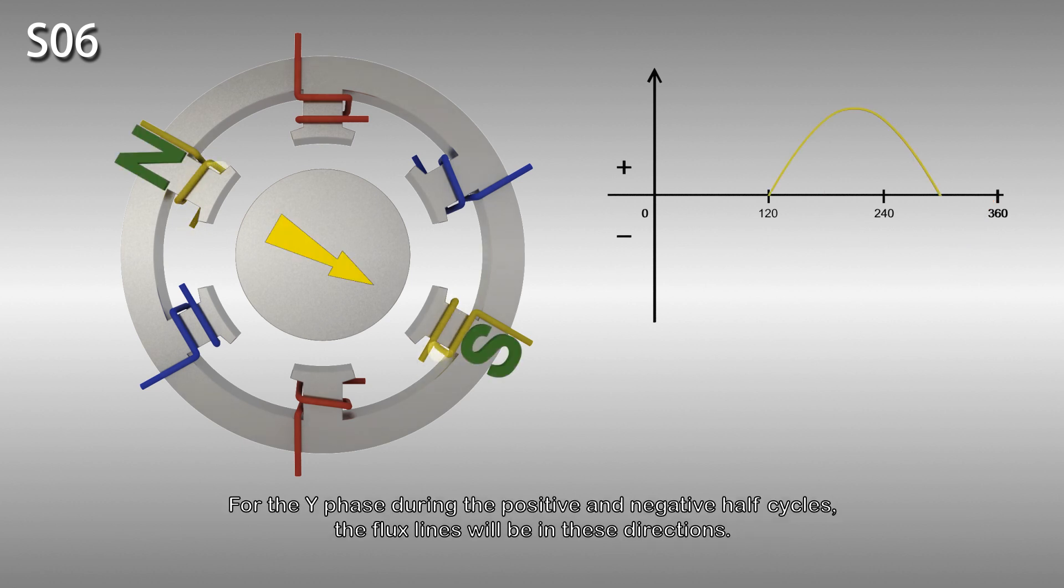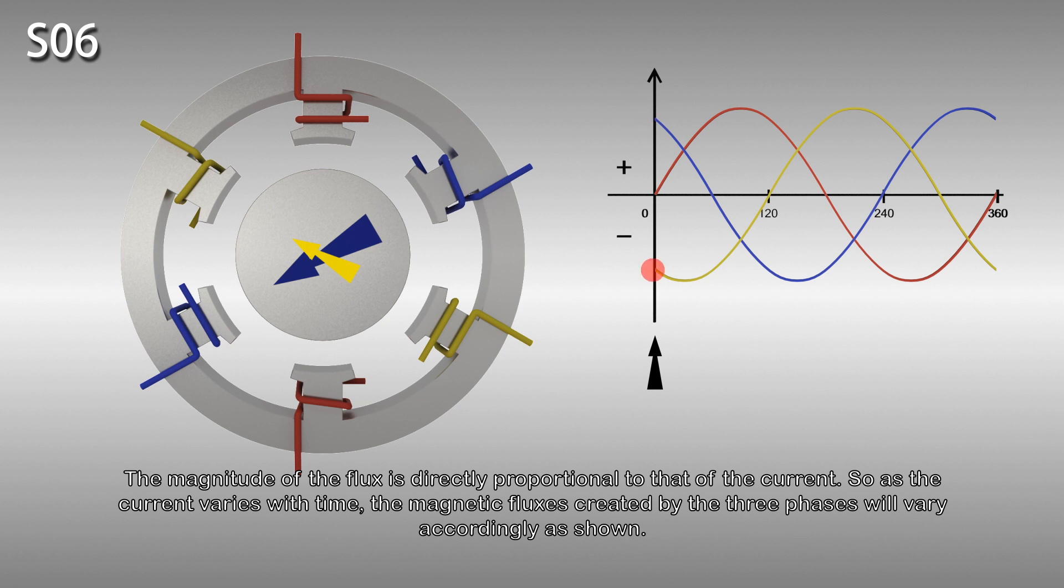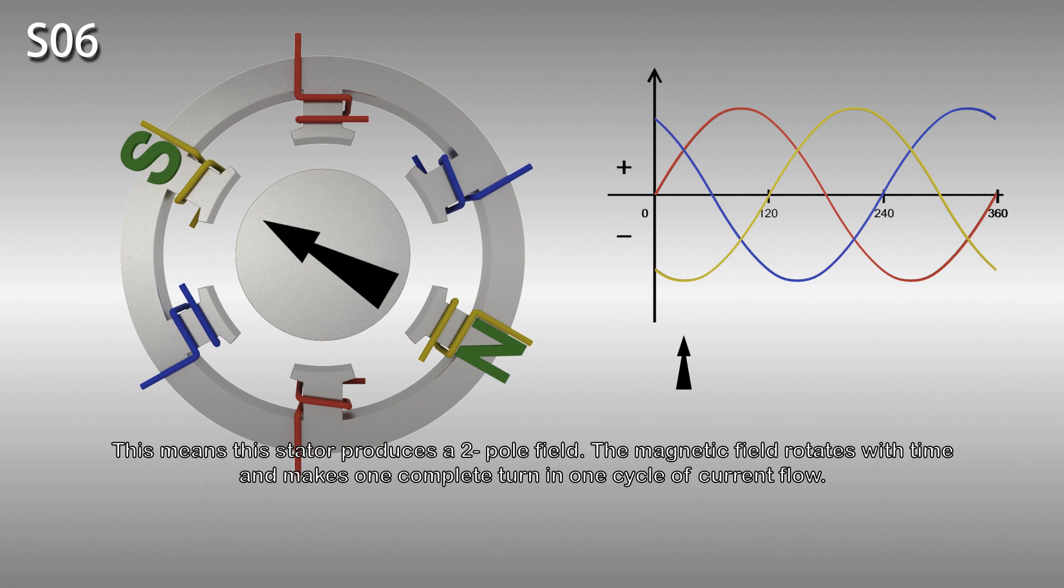For the Y phase during the positive and negative half cycles, the flux lines will be in these directions. For the B phase during the positive and negative half cycles, the flux lines will be in these directions. The magnitude of the flux is directly proportional to that of the current. As the current varies with time, the magnetic fluxes created by the three phases will vary accordingly as shown. As flux lines can't cross each other, the three fluxes combine and produce a magnetic field, having essentially one broad north pole and one broad south pole. This means this stator produces a two-pole field.